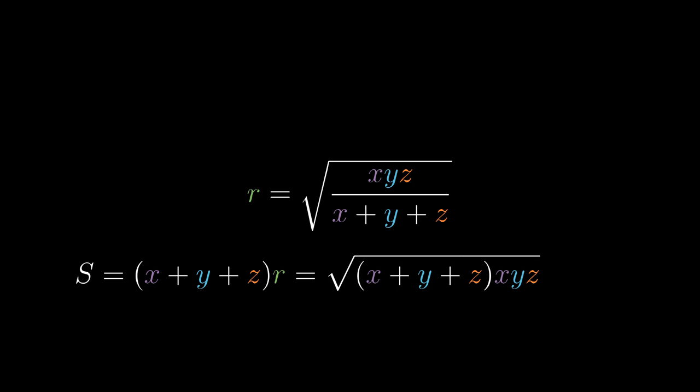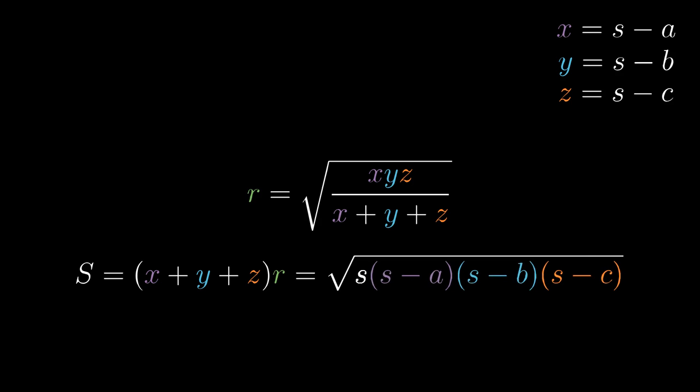Well, almost. To finish it, we have to recall that the sum x plus y plus z is actually s denoting the half of the perimeter and that we can express a particular x, y, z as s minus a, s minus b and s minus c. Voila.